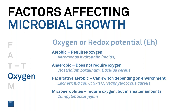Next is oxygen, sometimes referred to as redox potential. We have aerobic, which requires oxygen; anaerobic, which does not; facultative aerobic, which can switch between aerobic and anaerobic depending on the environment; and microaerophiles, which require oxygen but in smaller amounts than is available in the atmosphere — so they grow in restricted oxygen conditions.